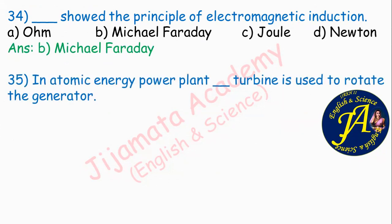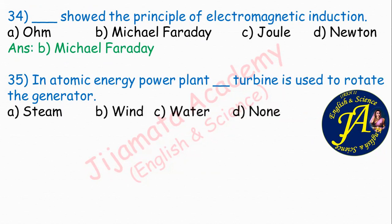In an atomic energy power plant, dash turbine is used to rotate the generator. Options are steam, wind, water, none. Option A: steam turbine is the correct answer. In an atomic power plant, radioactive atoms are used — neutron bombardment causes a burst releasing high energy, which boils water to produce steam, and that steam drives the steam turbine.